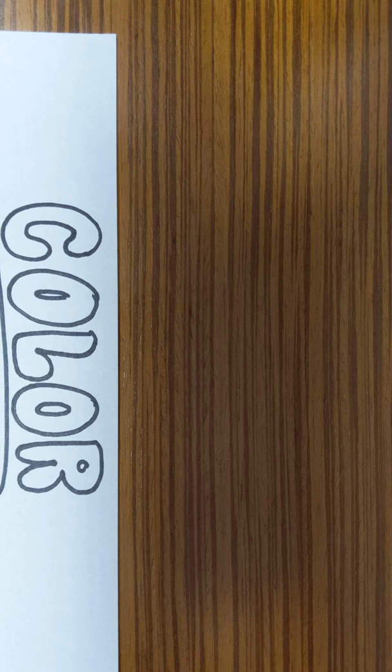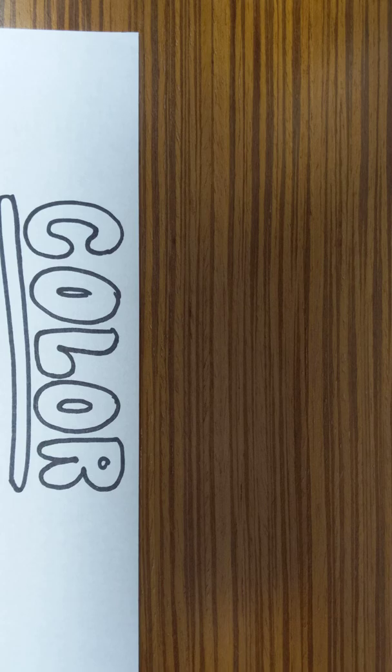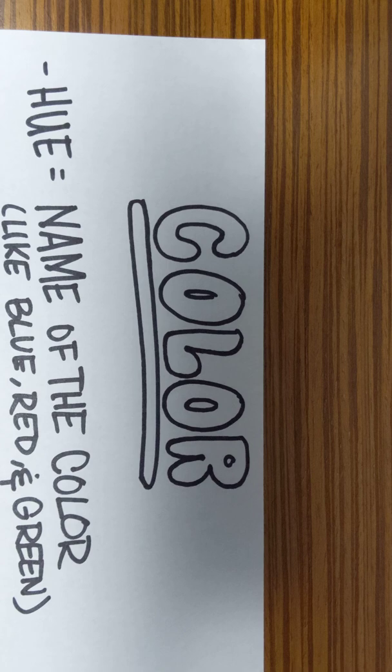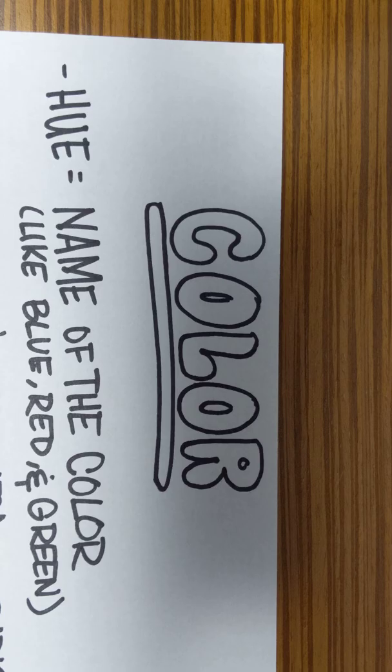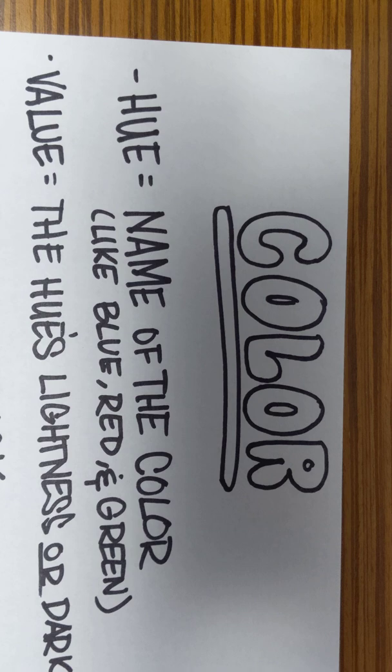First, we'll go over color. Color has several different parts. First is the hue, which is the name of the color, like red, blue, and green. Second is the value, which is the hue's lightness or darkness.